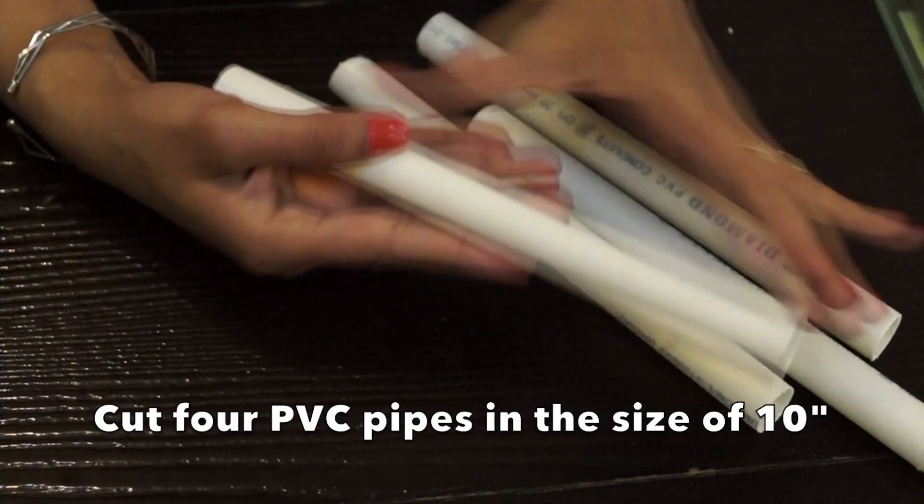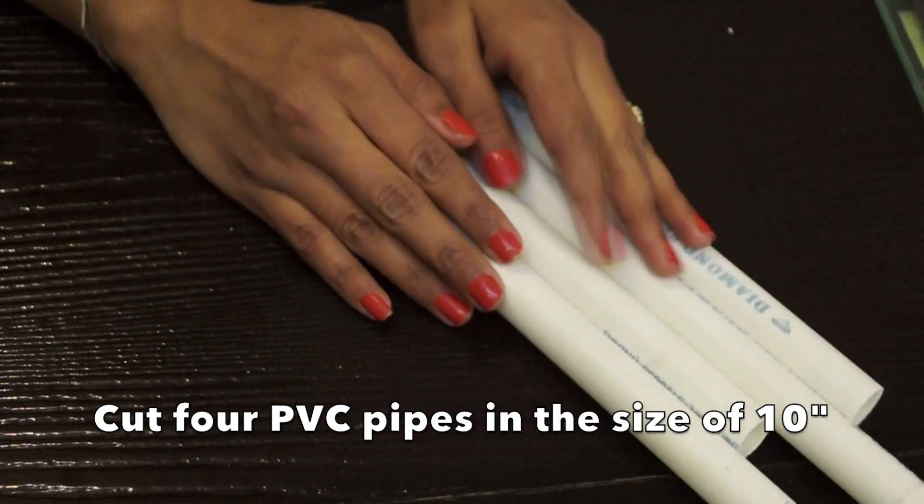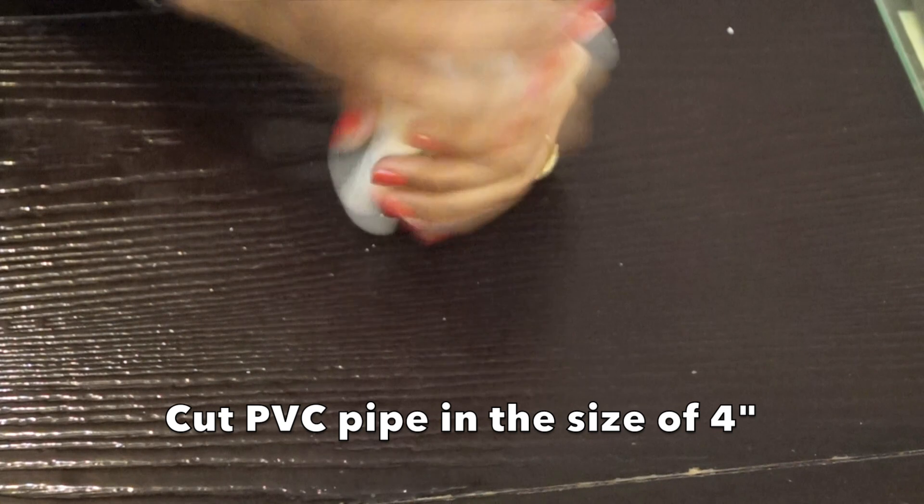So first we need to cut 4 PVC pipes in the size of 10 inches. You can cut these PVC pipes with the help of a saw which you get from the hardware shop.